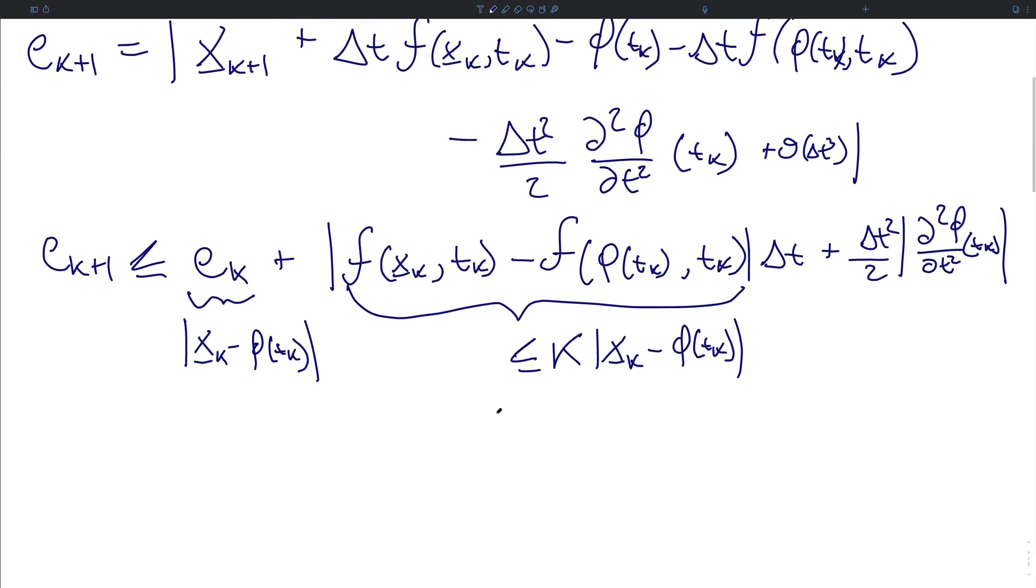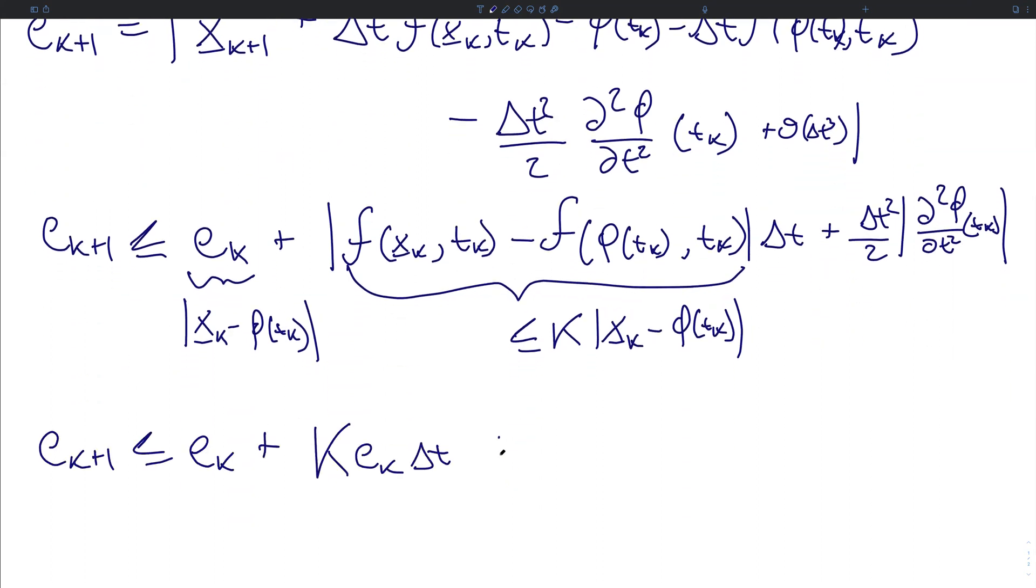Therefore, we can rewrite the local truncation error as eₖ₊₁ ≤ eₖ + K·eₖ·Δt + MΔt²/2, where M is defined as the maximum value over all time of the second partial of φ in time. We can simplify this algebraically and write eₖ₊₁ ≤ (1 + KΔt)·eₖ + MΔt²/2. This is the statement of the local truncation error for the Forward Euler method.